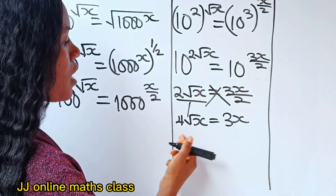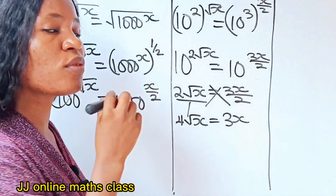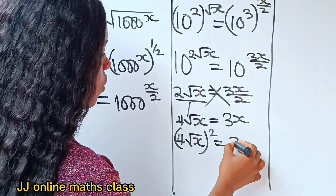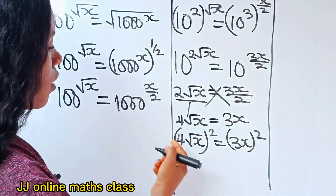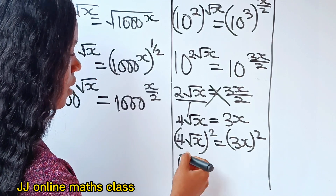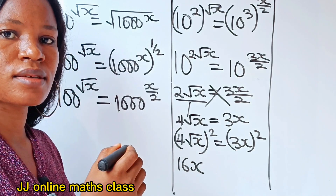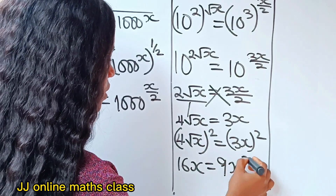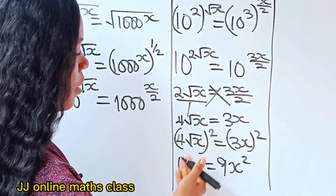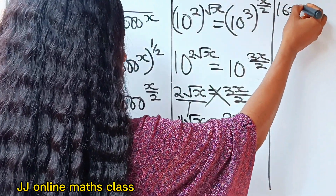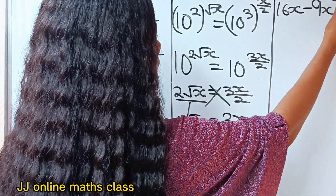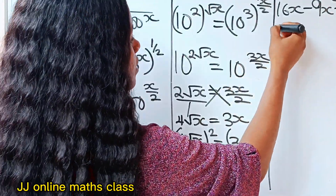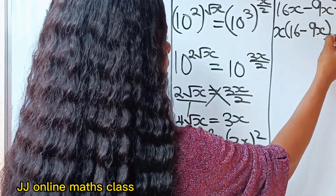Now let's square both sides of this equation so that we can remove the root sign. So 4 root x squared is equal to 3x squared. That gives us 16x is equal to 9x squared. We can rewrite this as 16x minus 9x squared equals 0, and factorize x out to get x times (16 minus 9x) equals 0.